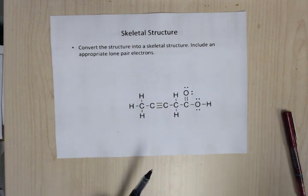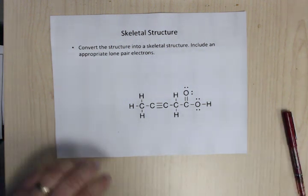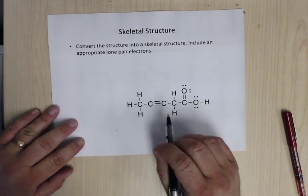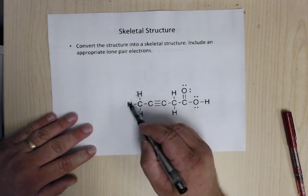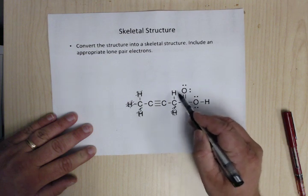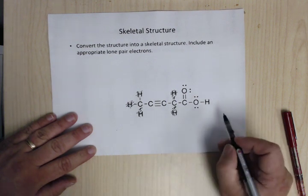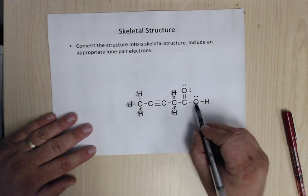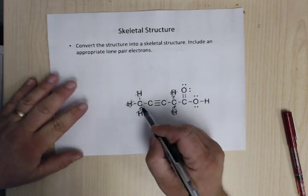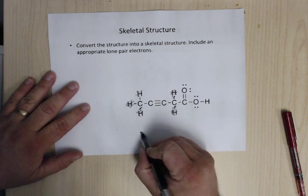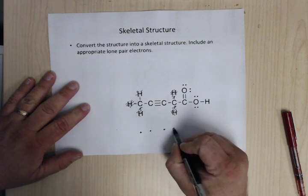So now skeletal structures. For this one, remember, we don't have to show the CH bonds. So the easiest thing to do is just get rid of any CH bonds here. Now this H we're going to have to keep, it's an OH, so that we have to show. So when you're first starting out, I always like the dots. So just transpose these carbons as dots. So dot, dot, dot, dot, dot.